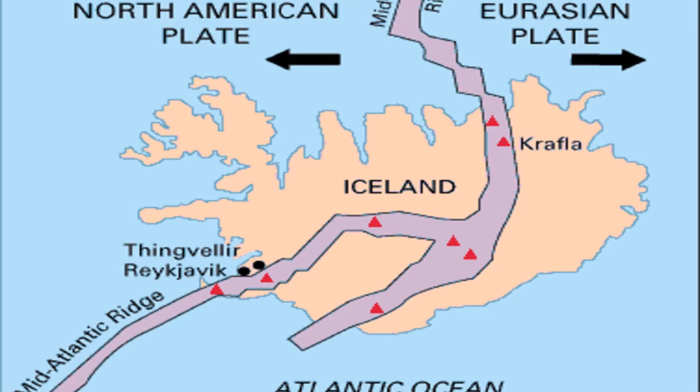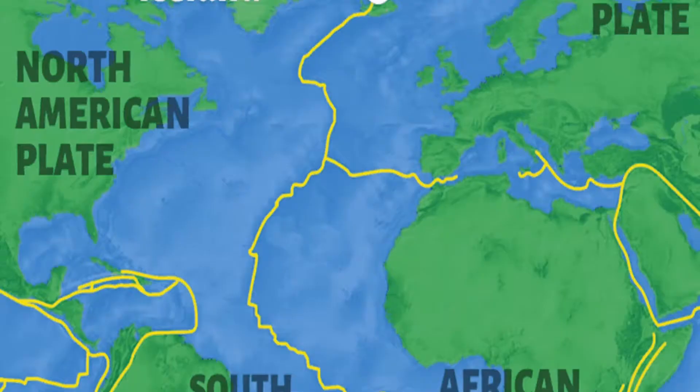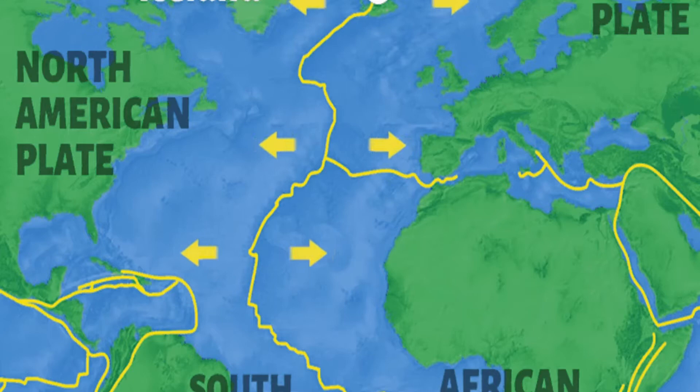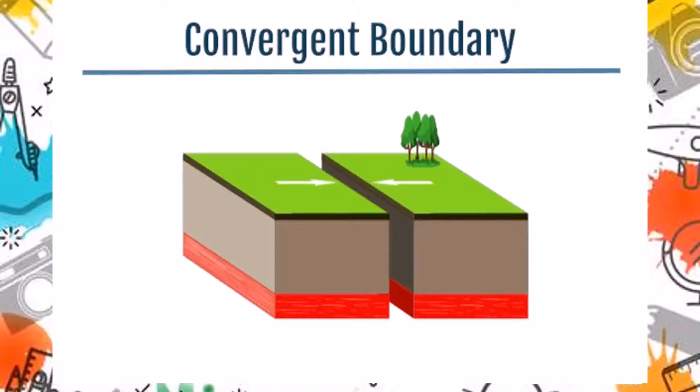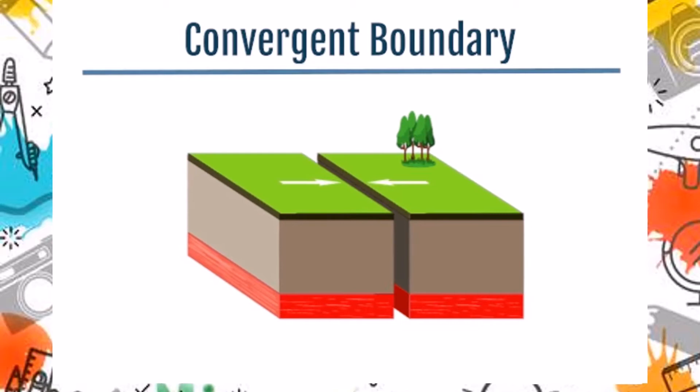The mid-ocean ridge, the Earth's longest mountain range, is a 65,000 km long and 1,500 km wide divergent boundary. In Iceland, one of the most geologically active locations on Earth, the divergence of the North American and Eurasian plates along the mid-Atlantic ridge can be observed as the ridge rises above sea level.